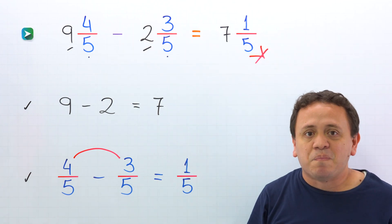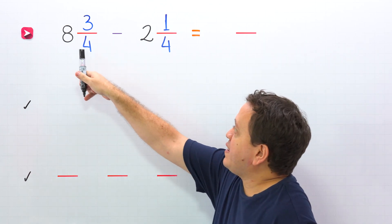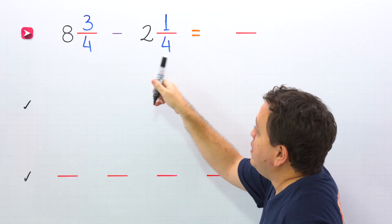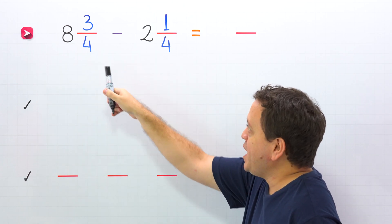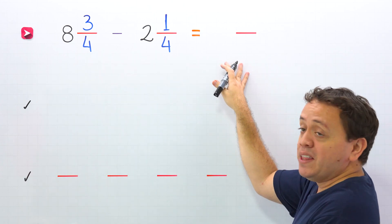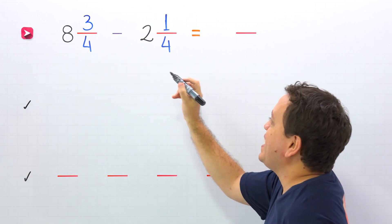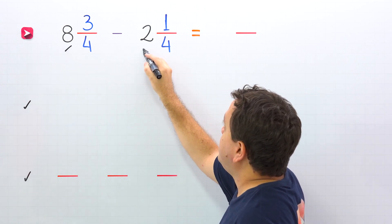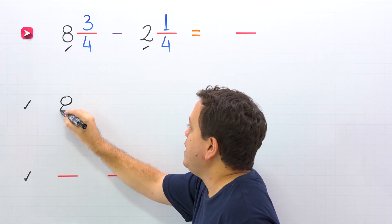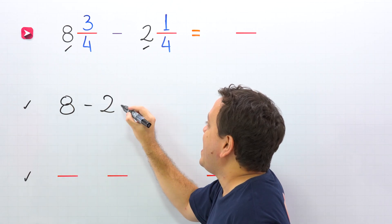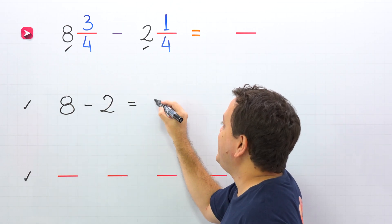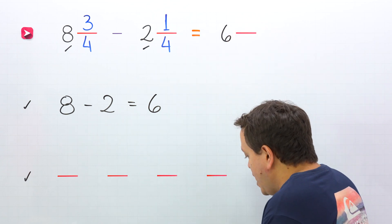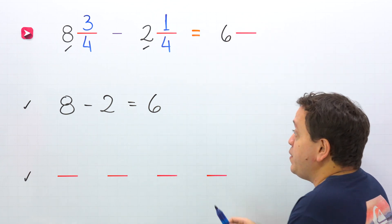Let's move on to another example. In this problem, we need to subtract eight and three-fourths minus two and one-fourth. These two mixed numbers have the same denominator. To find the difference, first we need to subtract the whole numbers. The whole numbers are eight and two. So we put eight minus two, and eight minus two gives us six. Next, we put six in the answer. We have the difference of the whole numbers.